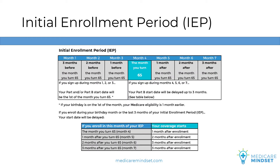Medicare beneficiaries have the opportunity to enroll in Medicare Part A and Part B during their IEP when turning 65. It's the three months before your birthday month, your birthday month, and the three months after your birthday month, for a total of seven months. Start dates are always the first of the month, and there can be delays in the Part B start date when submitting the enrollment in months four through seven. For example, if you submit your online Medicare enrollment in month six of your IEP, your Part B won't start the next month — rather, it will start three months later. So be careful when enrolling in Medicare during the final few months of your IEP.